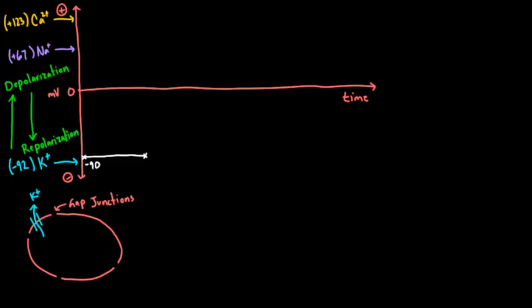Now let's say a neighboring cell has a little bit of a depolarization — it goes positive — and through the gap junctions, leaks a little bit of sodium and some calcium into our cell. With some positive ions now sitting inside, our cell becomes a little bit more positive. It goes up to around negative 70, up from negative 90 — and this happens pretty quickly.